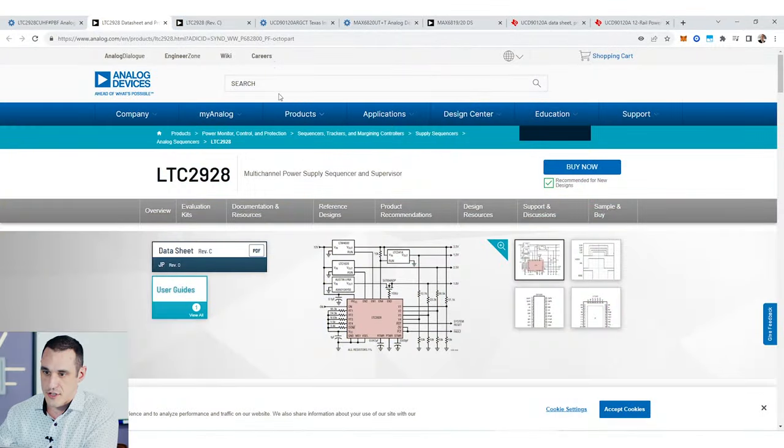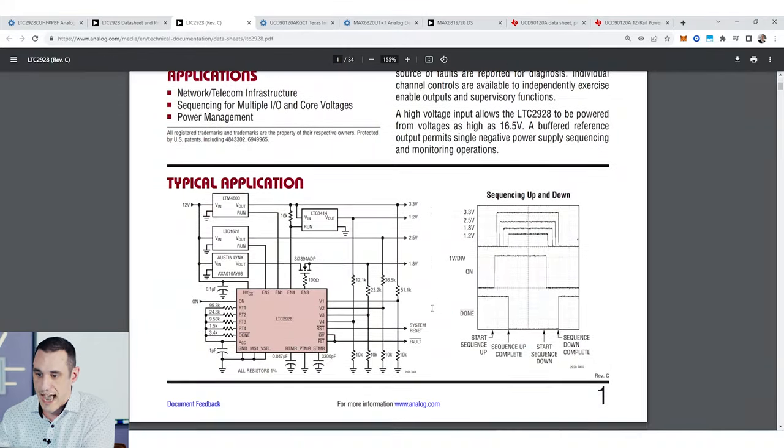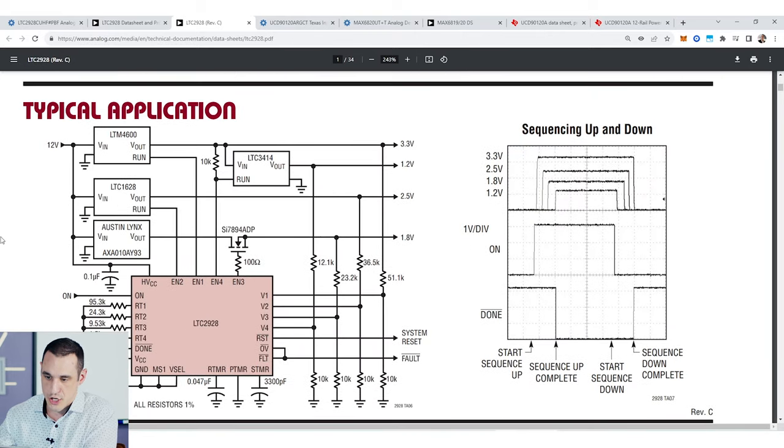So now let's take a look at a different type of power sequencer. Some power sequencers will actually toggle the enable pins on other integrated circuits in order to turn them on and it will do that in a specific sequence. So one example of a component that will do that is the LTC2928. So here if I just look in the data sheet for this part we can see how this device works. So if I zoom in on the application circuit you can see here that the 2928 is monitoring the voltage output from a series of other regulators.